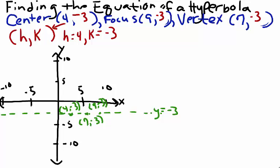The distance from our center to our vertex, from 4 to 7, is 3 units. Since x equals 7 minus x equals 4, so a is equal to 3.